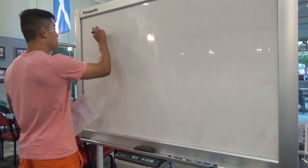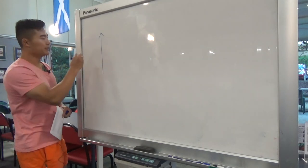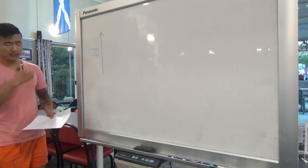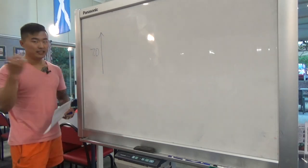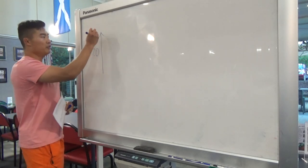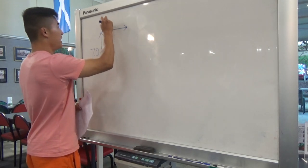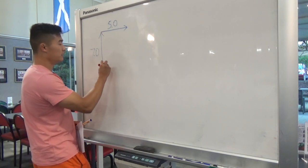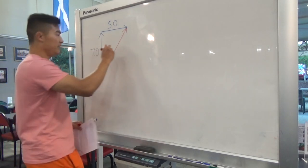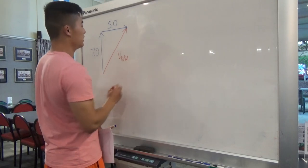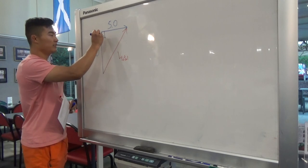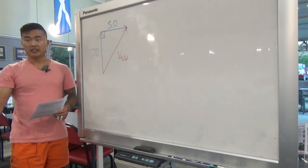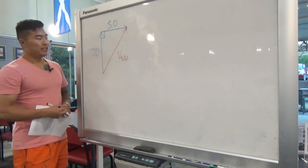We draw one vector pointing north — in this instance, straight up — with magnitude 7.0 meters per second. Then we do head-to-tail: starting at the head of the first vector, we draw the wind vector of 5.0 meters per second pointing east. The resultant total velocity connects the tail to the head. You can see this forms a right-angle triangle, so we use Pythagoras' theorem.